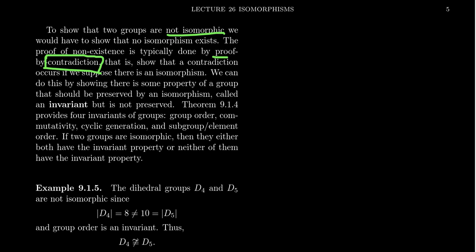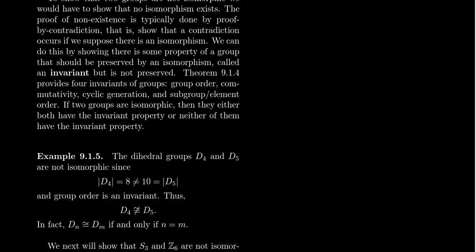This is where invariants come into play. If there was an isomorphism between two groups, that isomorphism must preserve all of the invariants. If there's an invariant that disagrees between the two groups, then they're not isomorphic — there's no isomorphism that could exist, because otherwise it would have preserved those invariants.